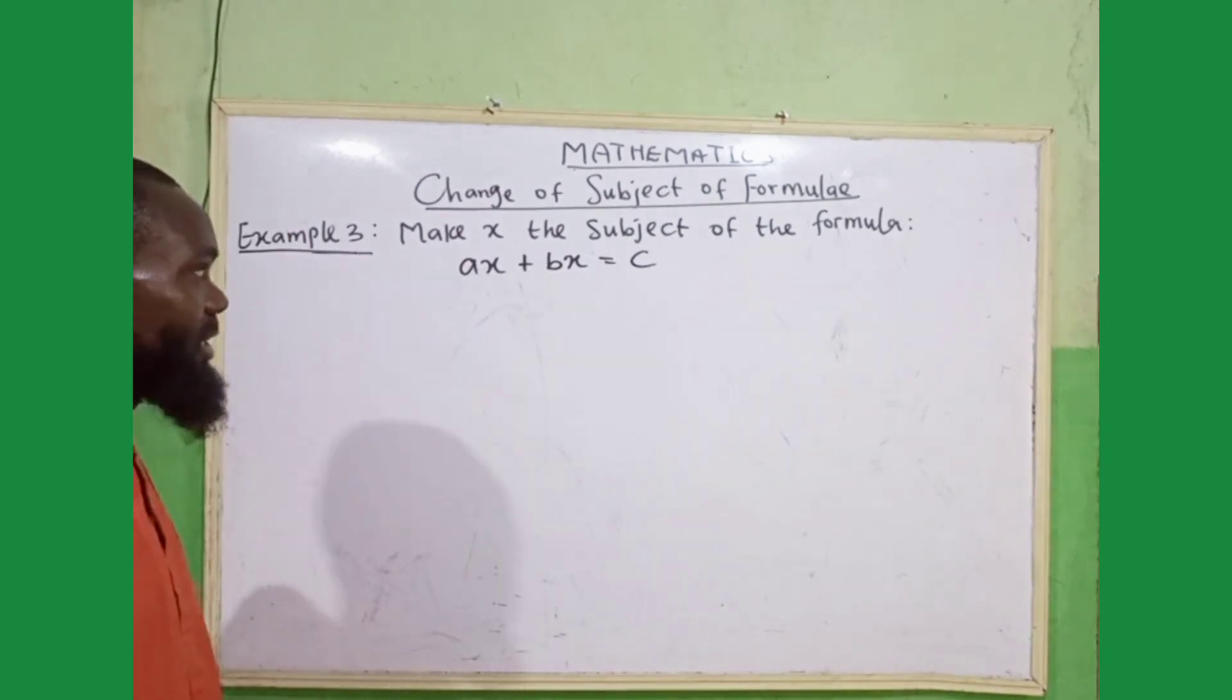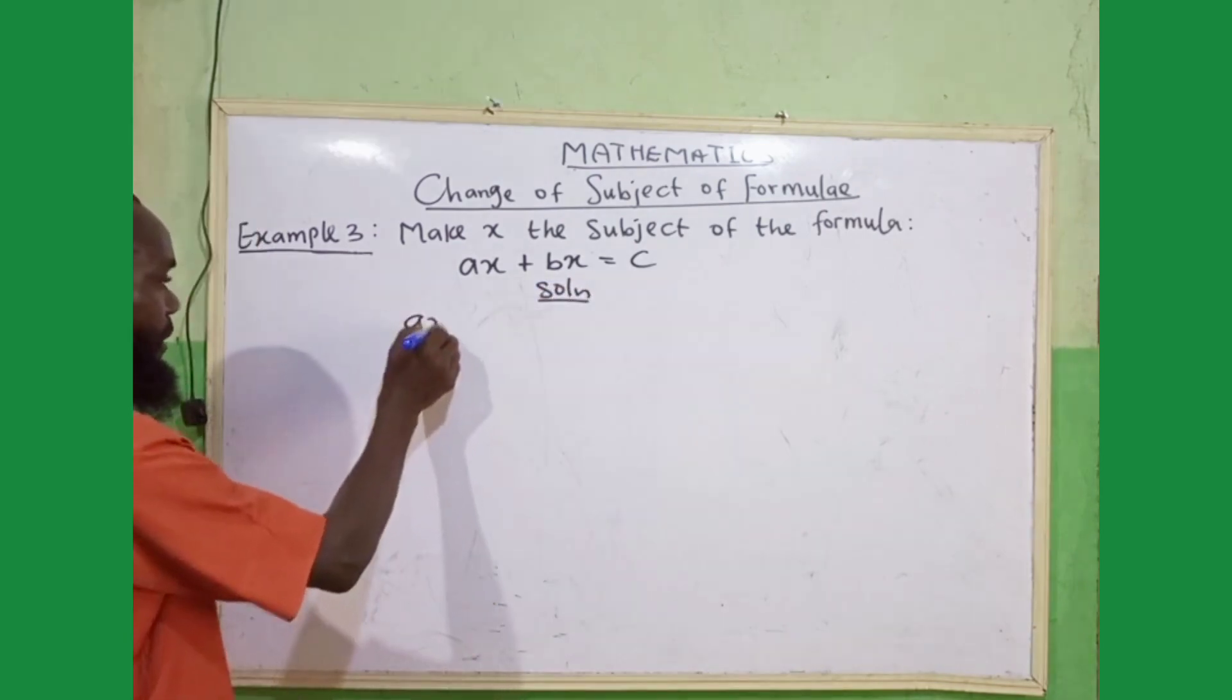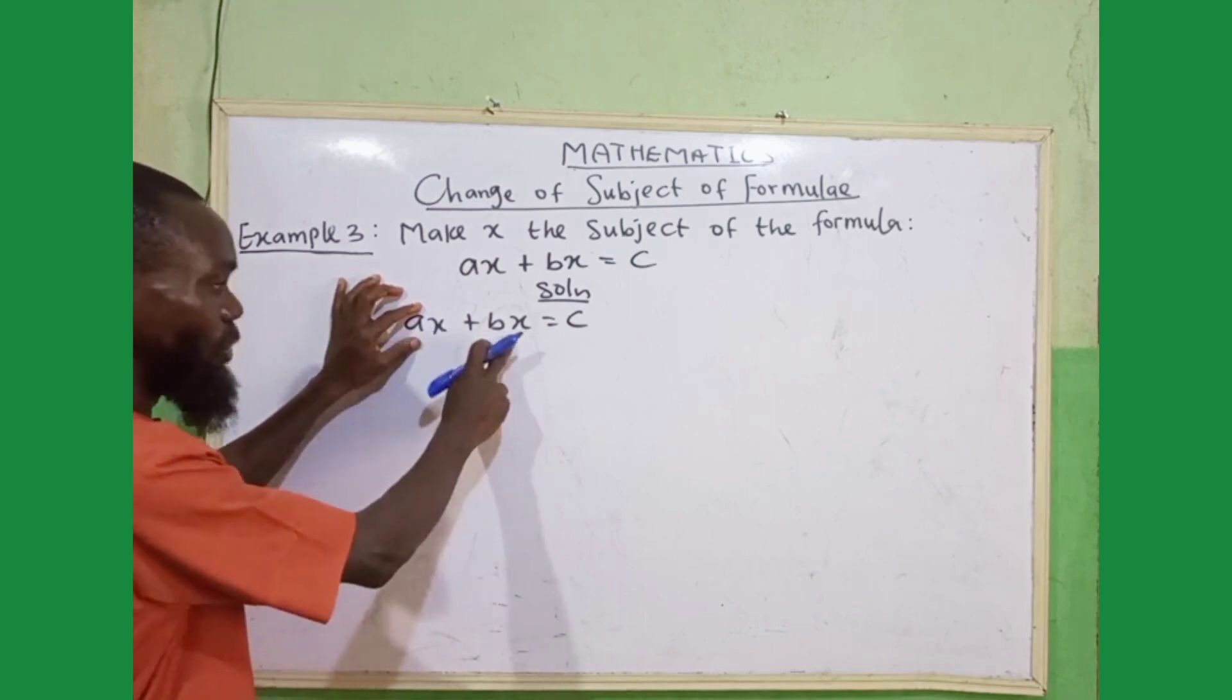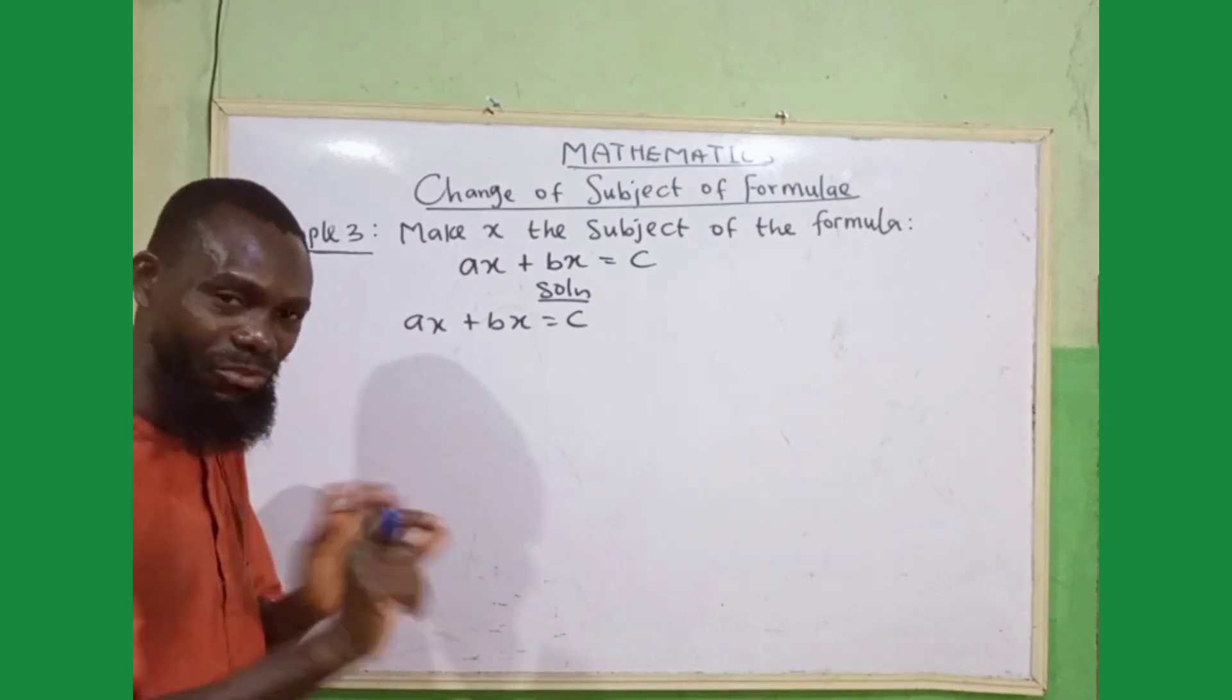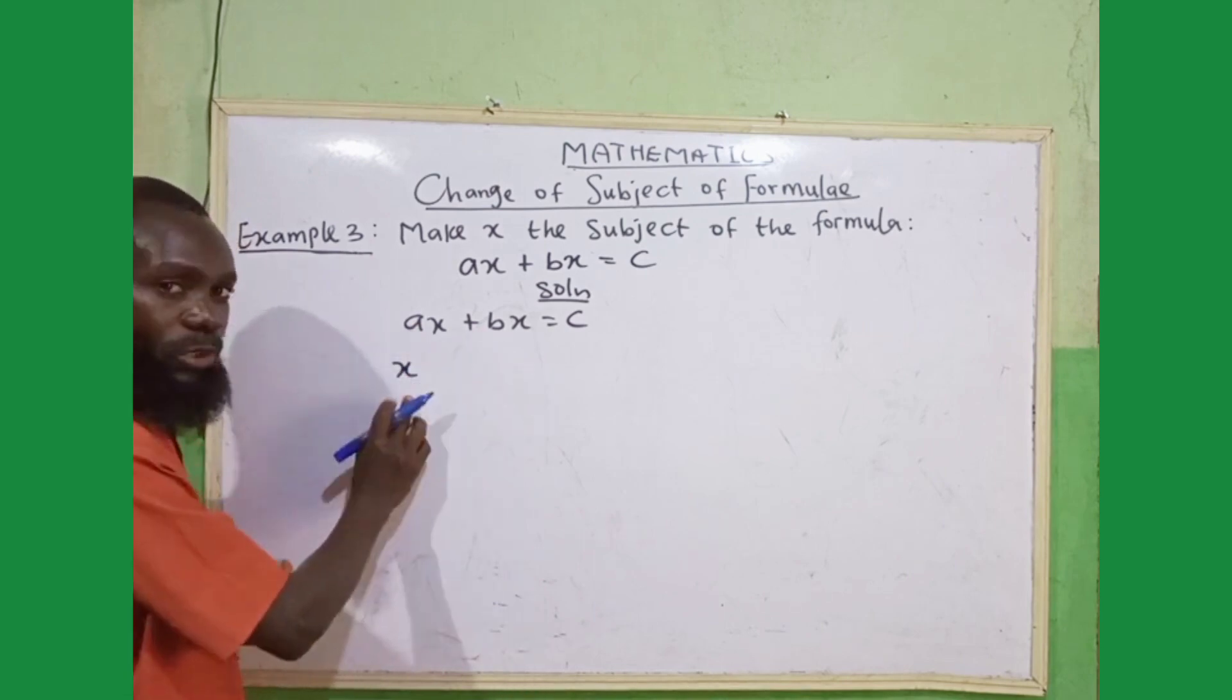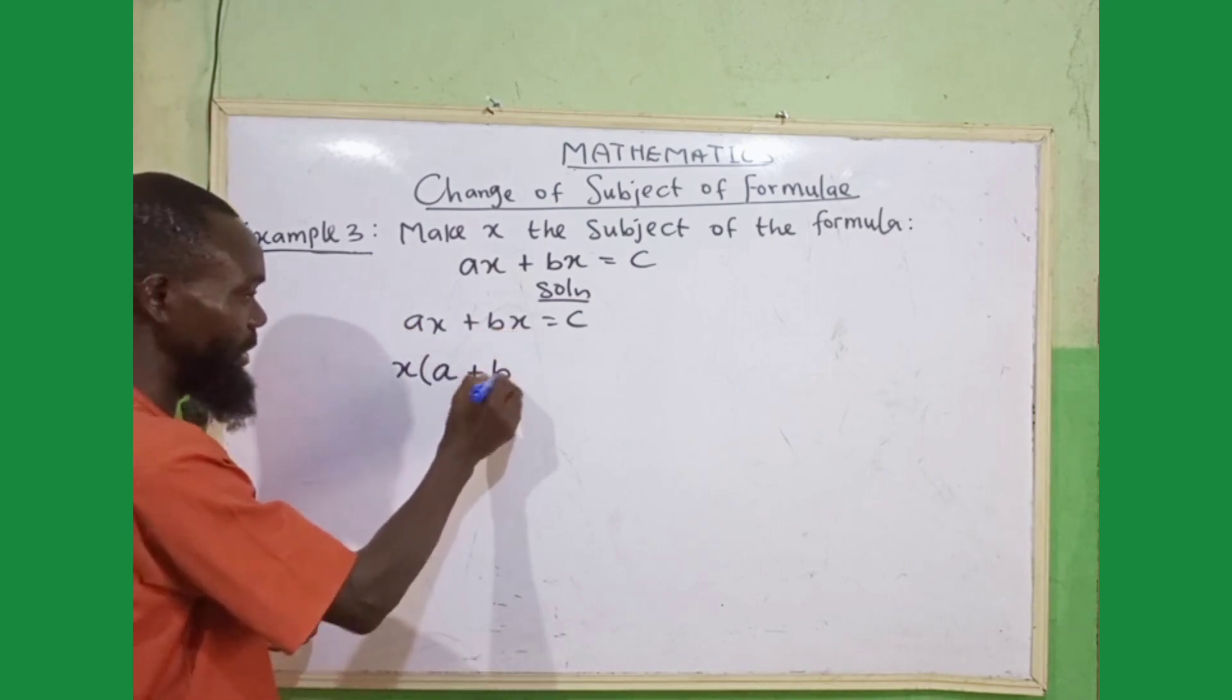Example three, make x the subject of the formula ax + bx = c. When you look at this, we have our unknown here, x, our unknown here, x. We must find a way of making the unknown to be one, meaning that it is not scattered in various positions. Which means, I can collect like terms here, I can factorize x out. x is common to both. Open your brackets. Since, if I remove this x here, it remains a, plus, since I've removed this x, it remains b, equals to c.